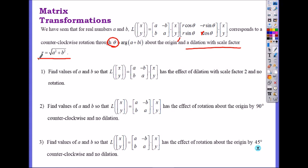So now find the value of a and b so that has an effect of dilation with scale factor 2 and no rotation. So scale factor of 2 was what? How did it look? It looked like r, r, 0, 0. Right? And the scale factor is 2. So how would it look like? 2, 0, 0, 2.